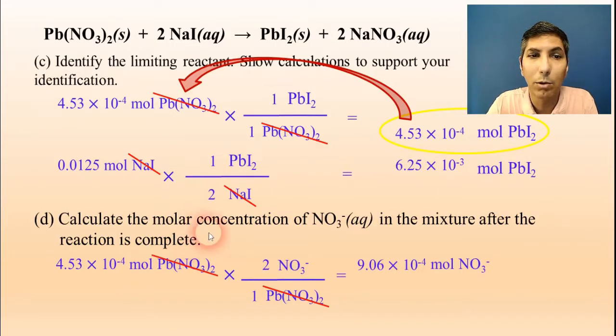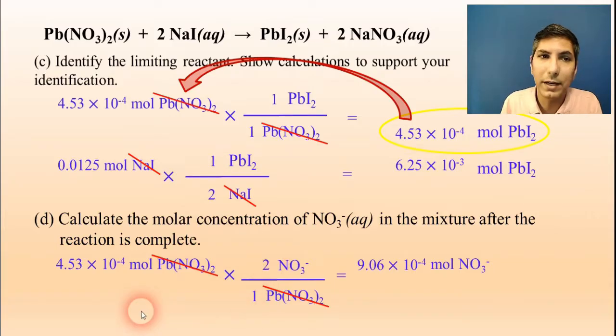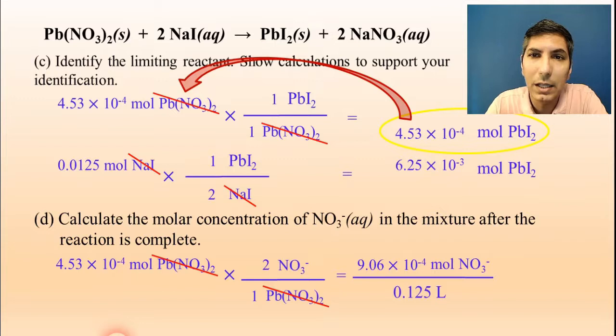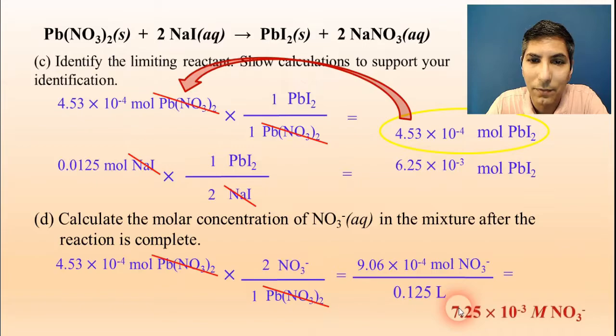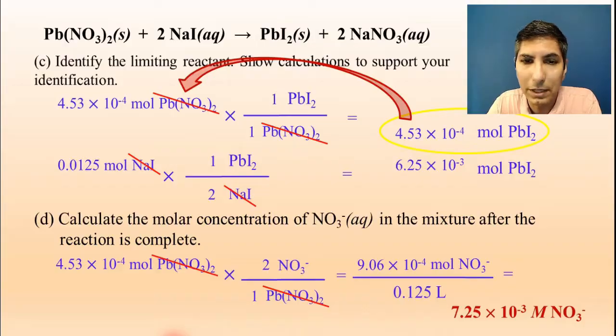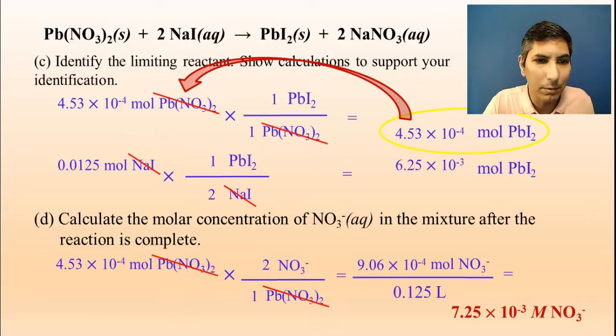Now, the question says the molar concentration. So that's moles divided by liters. In that header of the problem, it said that we had 125 milliliters of solution. And so we divide that by 0.125 liters. And when I do that, I get the final answer of about 7.25 times 10 to the negative third moles per liter of nitrate. So once again, this is just a simple stoichiometry problem. You have to keep some of these subscripts straight and then remember how to calculate the molarity of this.